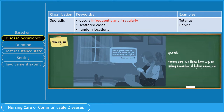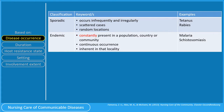Moving on, a disease is said to be endemic if it has continuous occurrence, a steady frequency, or if it occurs over a period of time and it is inherent in that locality. In simplest terms, it is constantly present in a population, country, or community. Examples of this include malaria and schistosomiasis.